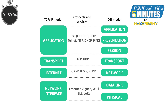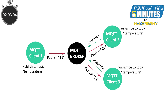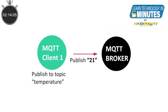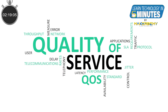This makes quality of service one of the most important features of MQTT. As MQTT is based on the publish-subscribe model, we will need to consider both the publisher-to-broker quality of service and broker-to-subscriber quality of service. For ease of learning, we will look at the quality of service levels from the publishing perspective. Now let us take a closer look at the different quality of service levels available in MQTT and how they work.